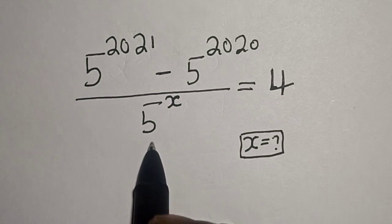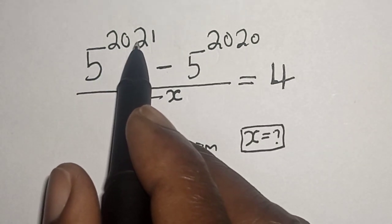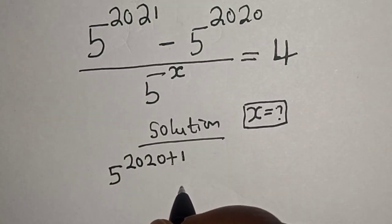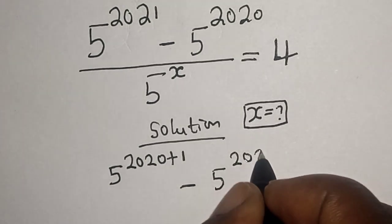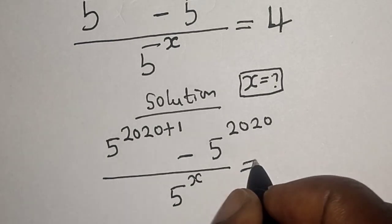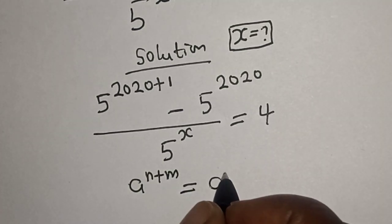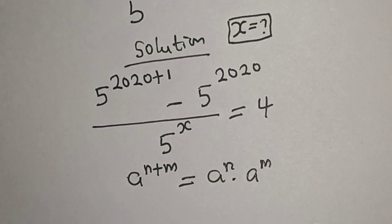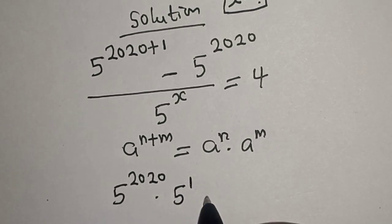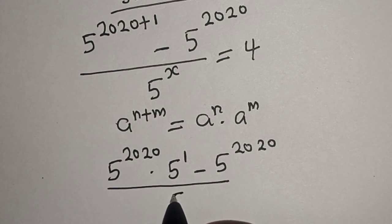But before we proceed, please don't forget to like, share, comment and subscribe. Solution: 5 raised to power 2021 can be written as 5 raised to power 2020 plus 1. Remember this rule that a raised to power n plus m is equal to a raised to power n multiplied by a raised to power m. So we have 5 raised to power 2020 multiplied by 5 raised to power 1 minus 5 raised to power 2020, divided by 5 raised to power s, is equal to 4.